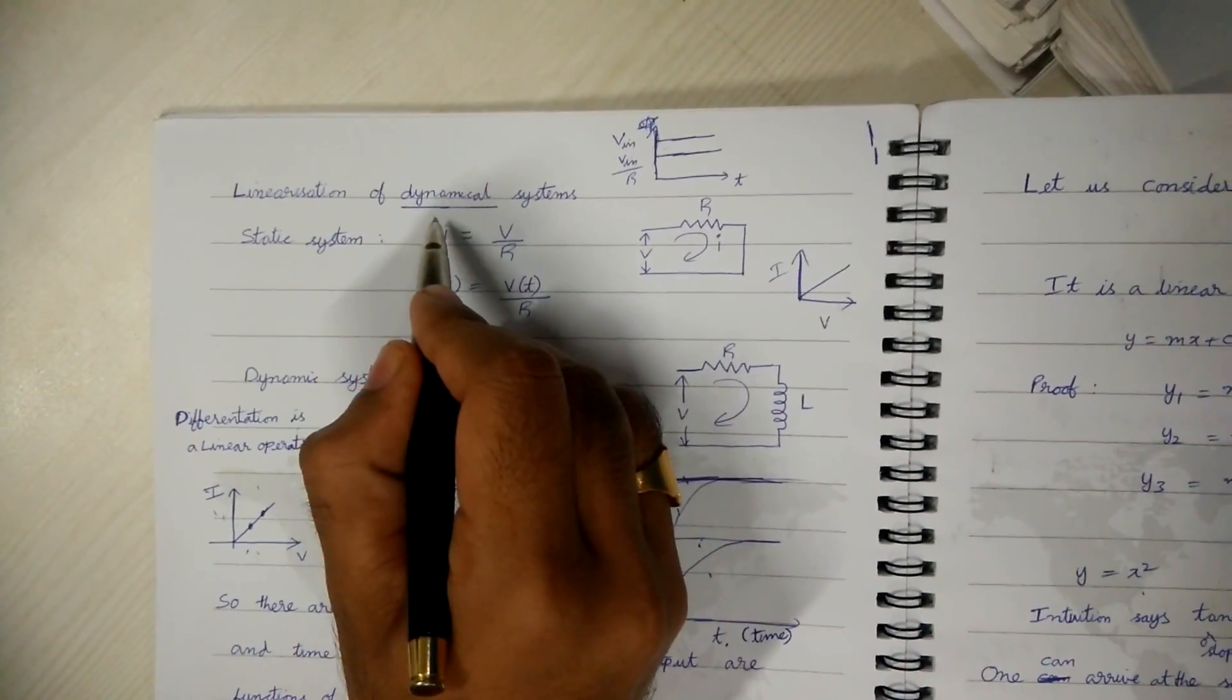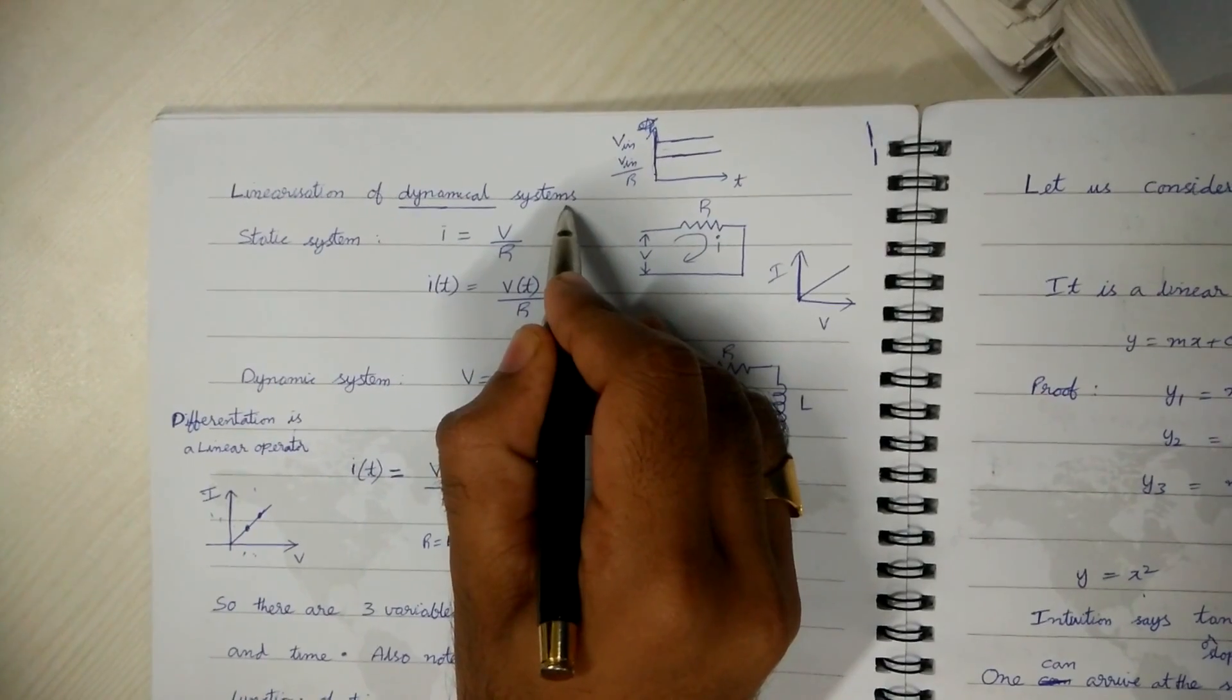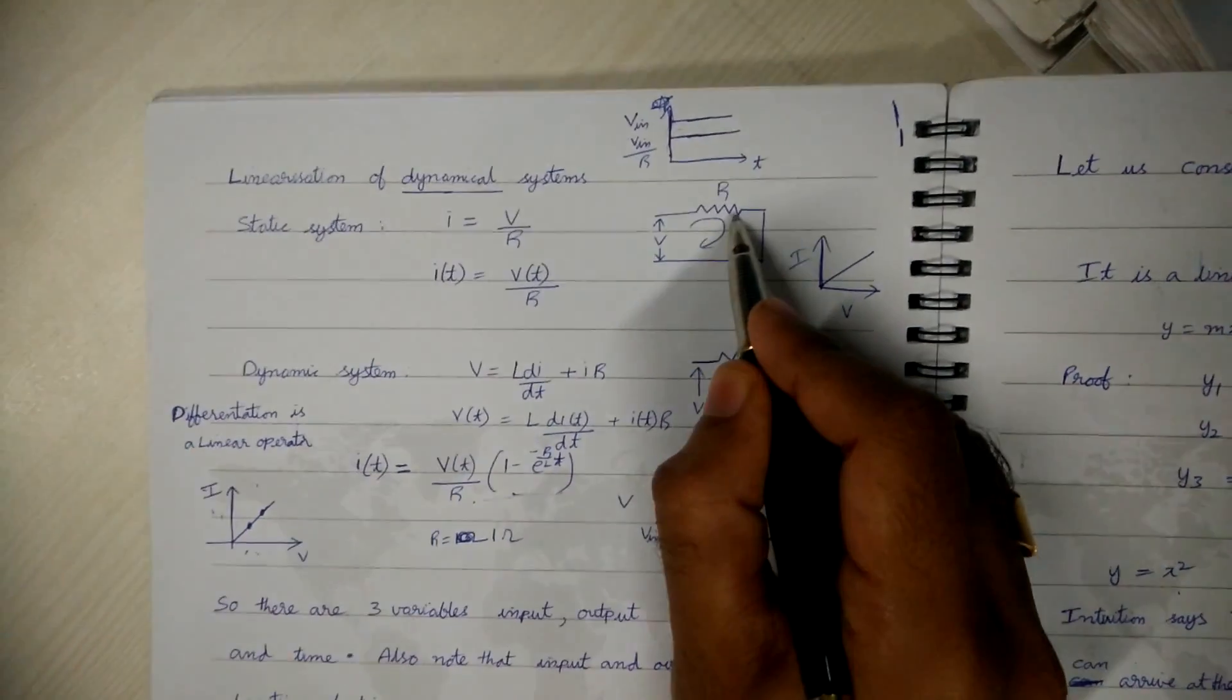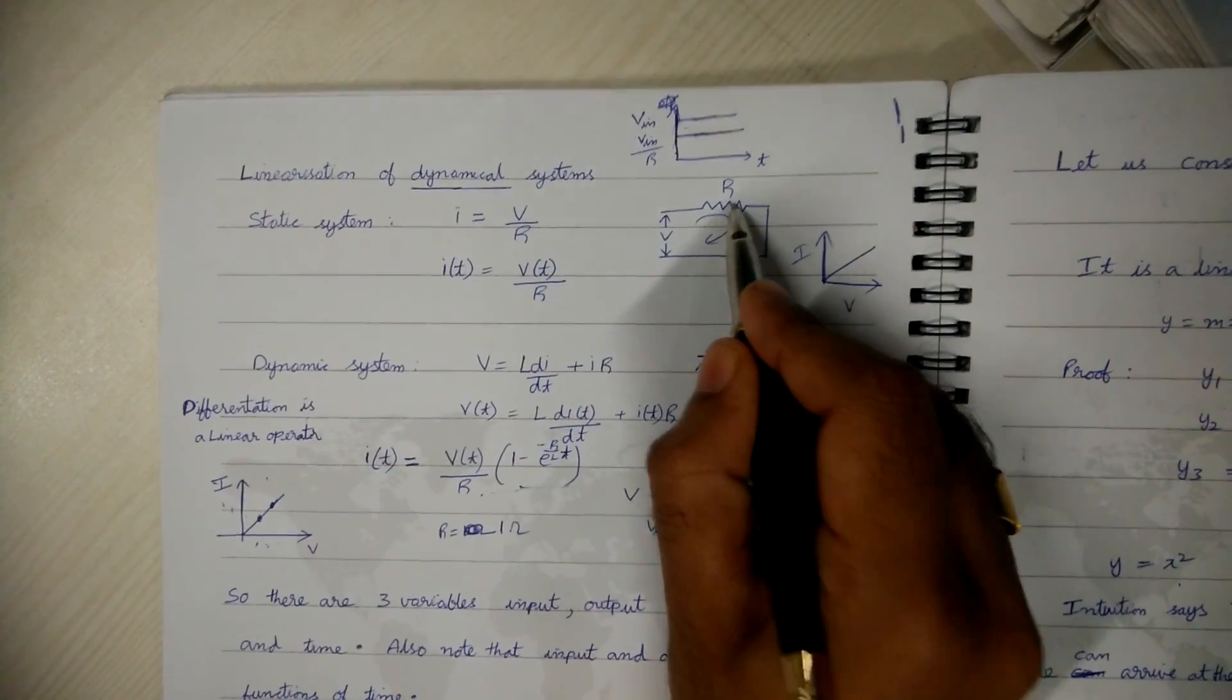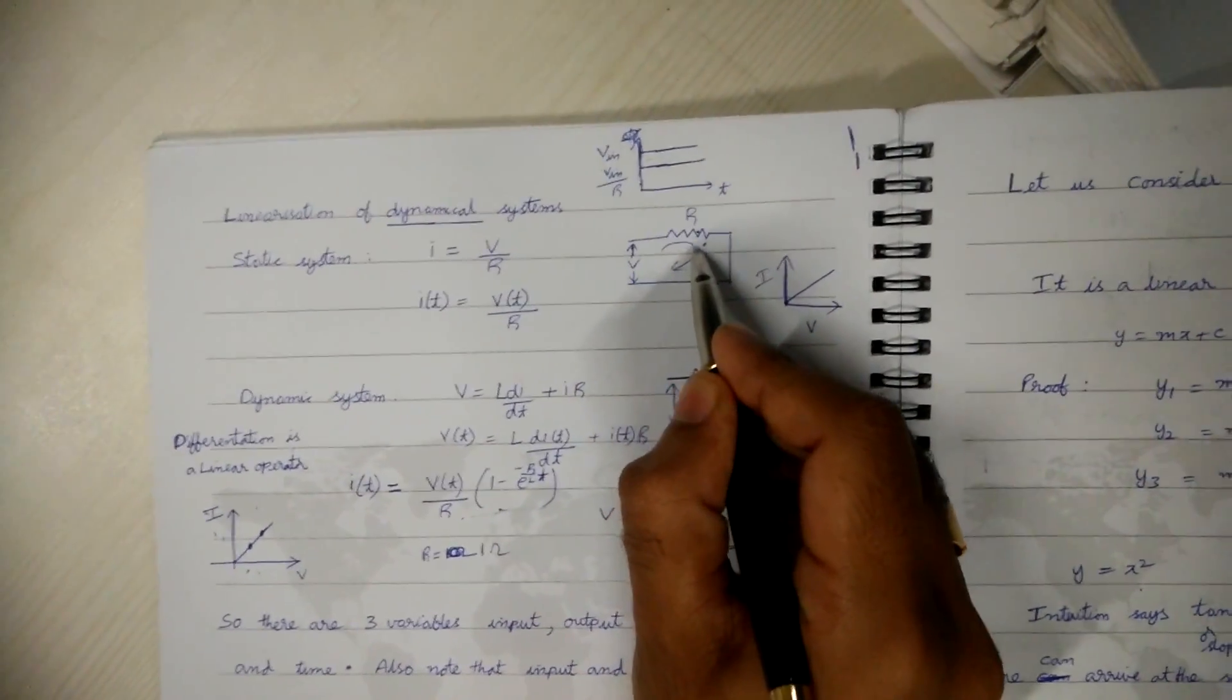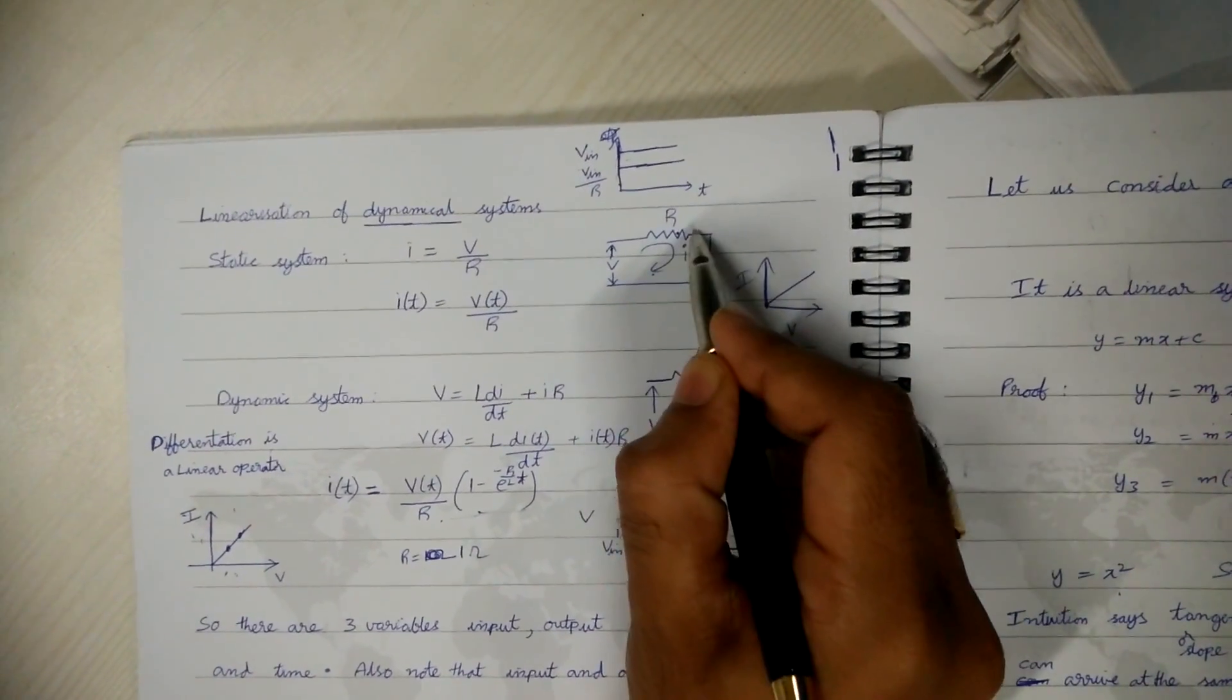Today we will see about linearization of dynamical systems. Consider a simple R load. This can be a bulb. When a voltage V is applied it draws some current and the bulb glows.